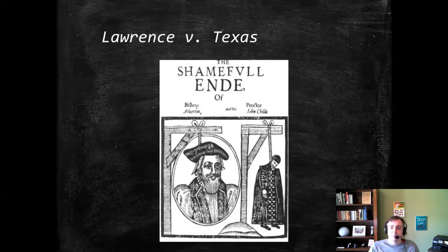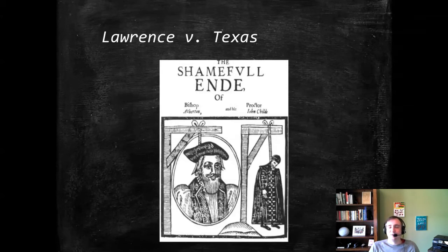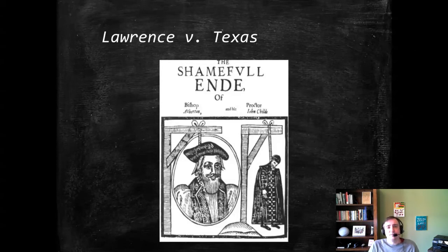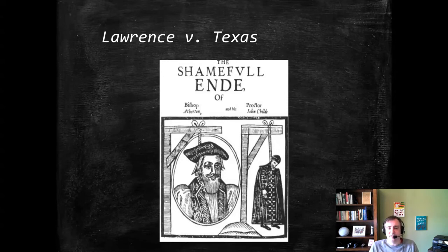Justice Kennedy writes an opinion here often lauded for recognizing a broader interest for adults to engage in private sexual activity. But the opinion is quite vague in terms of the contours and rationales underlying this right. Justice Kennedy likes to use the word dignity a lot, and dignity is a concept that's often hard to pin down in terms of how we apply it. His opinion also carves out certain things the majority opinion shouldn't apply to without explaining why — notably, he says it does not include prostitution, or paid sex work. That commercial versus non-commercial distinction is only stated, not justified, in the majority opinion.